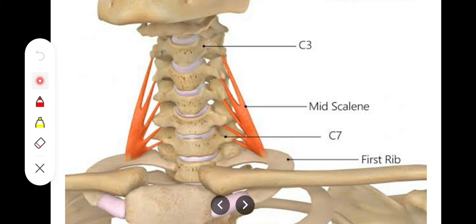For the insertion of scalenus anterior there is a scalenus tubercle on the first rib. On either side of this tubercle there are two grooves — one for the subclavian vein and one for the subclavian artery. The scalenus medius inserts just behind the groove for the subclavian artery on the superior aspect of the first rib. The nerve supply is by the ventral rami of C3 to C8 spinal nerves, corresponding to its origin at C3 to C7 vertebrae.